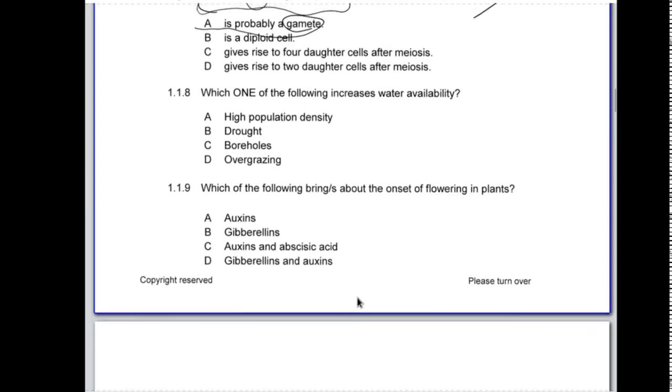1.1.8: which one of the following increases water availability? High population density, no, they're going to use more water. Drought, no, there's less rain. Boreholes, yes, if I have boreholes I can get into the groundwater and make water available to the people. Overgrazing, no, because we have water run down which decreases water availability. The correct answer is C.